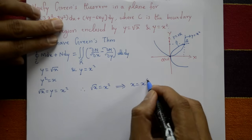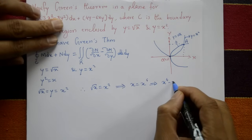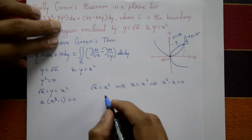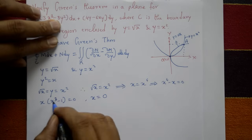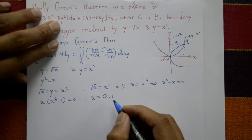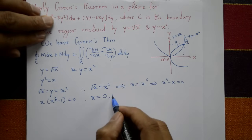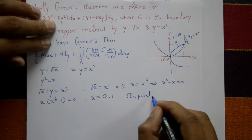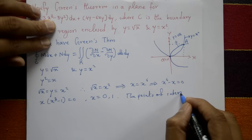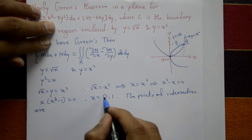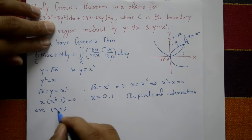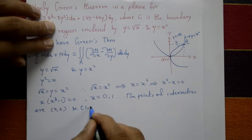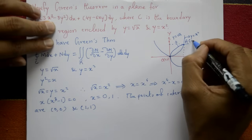Squaring both sides: x = x⁴, so x⁴ − x = 0, giving x(x³ − 1) = 0. Therefore x = 0 or x = 1. Substituting back: when x = 0, y = 0; when x = 1, y = 1. The points of intersection are (0,0) and (1,1), i.e., origin O and point A = (1,1).